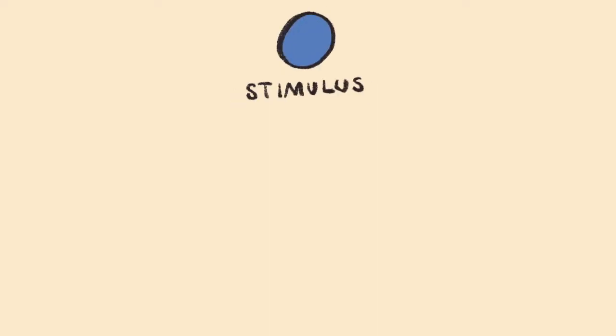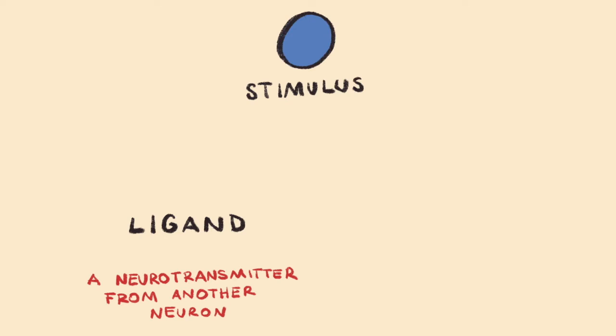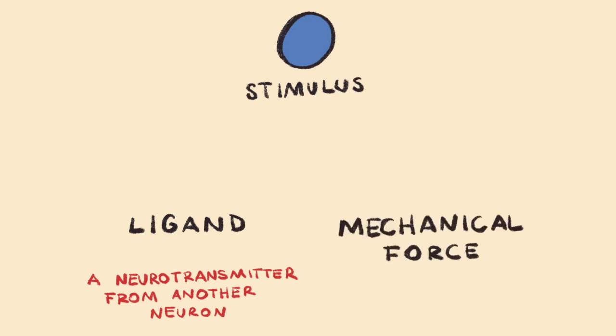Let's now move our attention to excitation of the neuron and deviating it from the negative 65 millivolt resting membrane potential. In order to first excite a neuron, a stimulus is needed. The stimulus will be either a ligand, which can be a chemical in food or the air, but also a neurotransmitter from another neuron — or it can be a mechanical force.